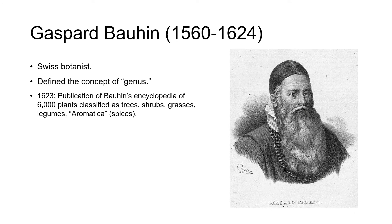Cesalpino's work was developed further in the late 1500s and early 1600s by the Swiss botanist Gaspar Bauhin. He's the first known person to propose the concept of genus for the classification of plants. Genus is the Latin word for birth, race or kind, and Bauhin defined it as a formal group of plants that all have similar physical characteristics. Bauhin's research culminated with the publication in 1623 of his encyclopedia of 6,000 plants classified by their life form as trees, shrubs, grasses, legumes, and aromatica, which were spices.